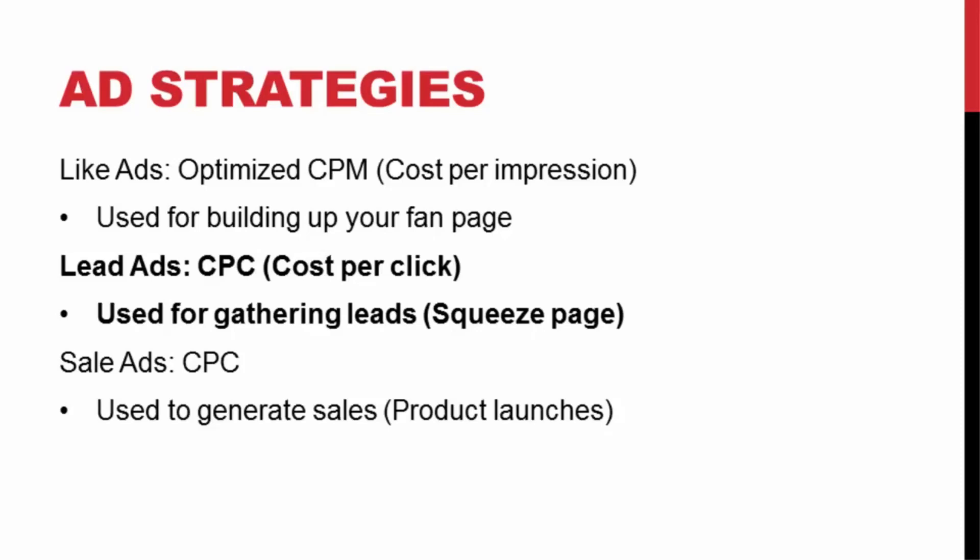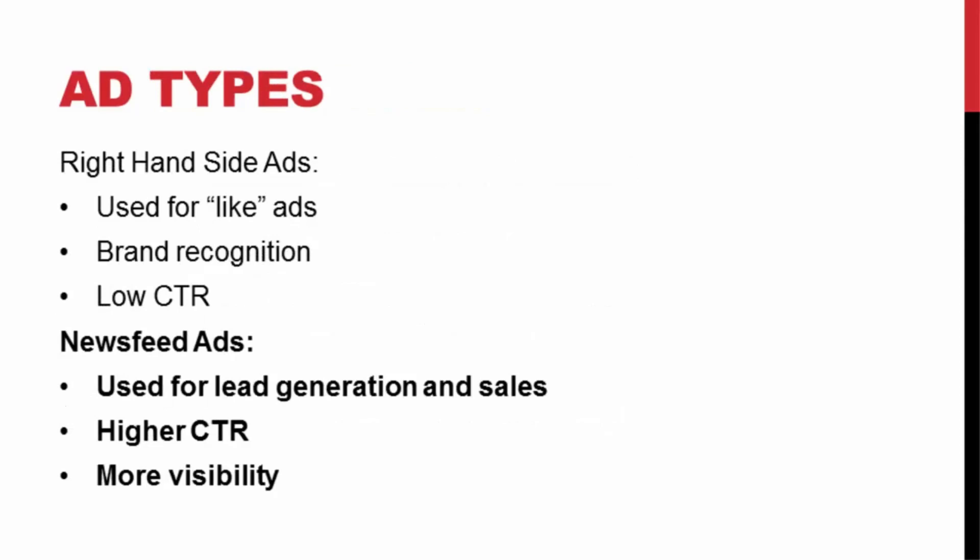Cost per click means you pay every time someone clicks on your ad, no matter what they do on the other end. CPM means you pay a flat amount per 1,000 impressions, so you pay one fee regardless of whether no one clicks or all 1,000 people click. There are also two types of placement: right-hand side ads and news feed ads. Right-hand side ads are usually better for like-type ads when building fan pages. For building an email list or making sales, we use the news feed ad — these are perfect for squeeze pages and sales pages.